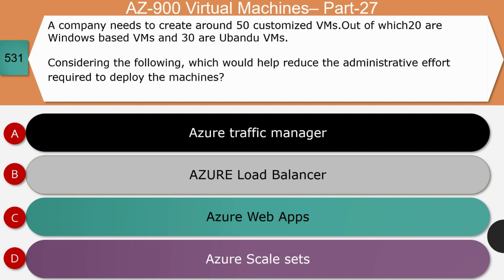Question 11: A company needs to create around 50 customized VMs — 20 Windows-based and 30 Ubuntu-based. Which option would help reduce administrative effort: Azure Traffic Manager, Azure Load Balancer, Azure Web Apps, or Azure Scale Set? The right answer is Azure Scale Set. Azure Virtual Machine Scale Sets let you create and manage a group of identical load-balanced VMs, and the number of VM instances can automatically increase or decrease in response to demand or a defined schedule.